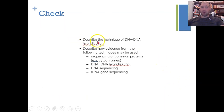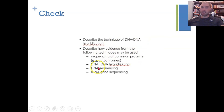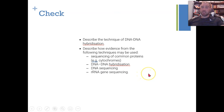To summarise, you need to be able to describe the technique of DNA-DNA hybridization and how evidence from sequencing of common proteins, DNA-DNA hybridization, DNA sequencing, and ribosomal RNA gene sequencing may be used. Today we covered biochemical evidence for evolution. That's it from FlipScience — see ya!